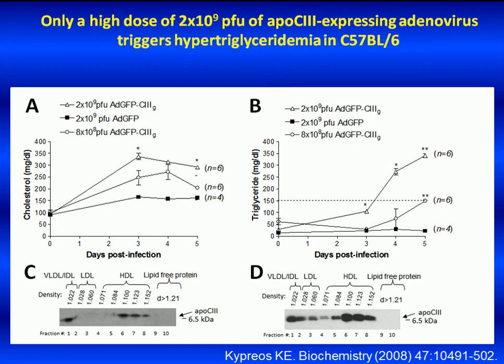To confirm that infection of mice with the ADGFP C3 adenovirus results in efficient production and secretion of human ApoC3 in the plasma of mice, wild-type C57 black 6 mice were treated via the tail vein with a moderate dose of 8×10⁸ PFU or a high dose of 2×10⁹ PFU of the ADGFP C3 adenovirus. Plasma samples were then collected on days 3, 4, and 5 post-infection, and plasma levels of human ApoC3, cholesterol, and triglycerides were determined as a function of time.